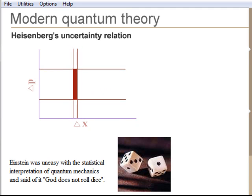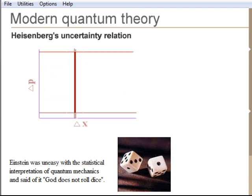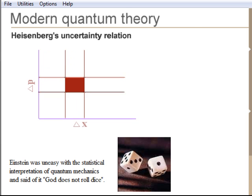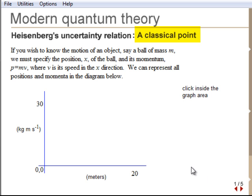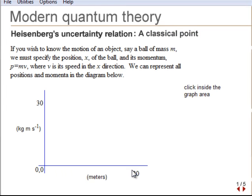The essential difference between classical and quantum mechanics is expressed concisely in the Heisenberg uncertainty relationship. A classical point can have its momentum and position represented by a point in position-momentum space. This space is called particle space.